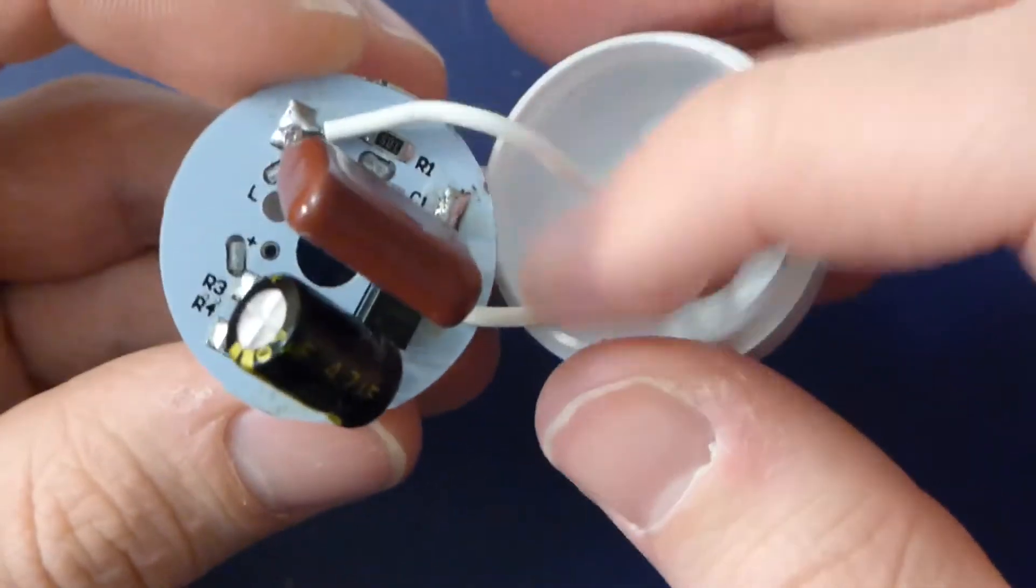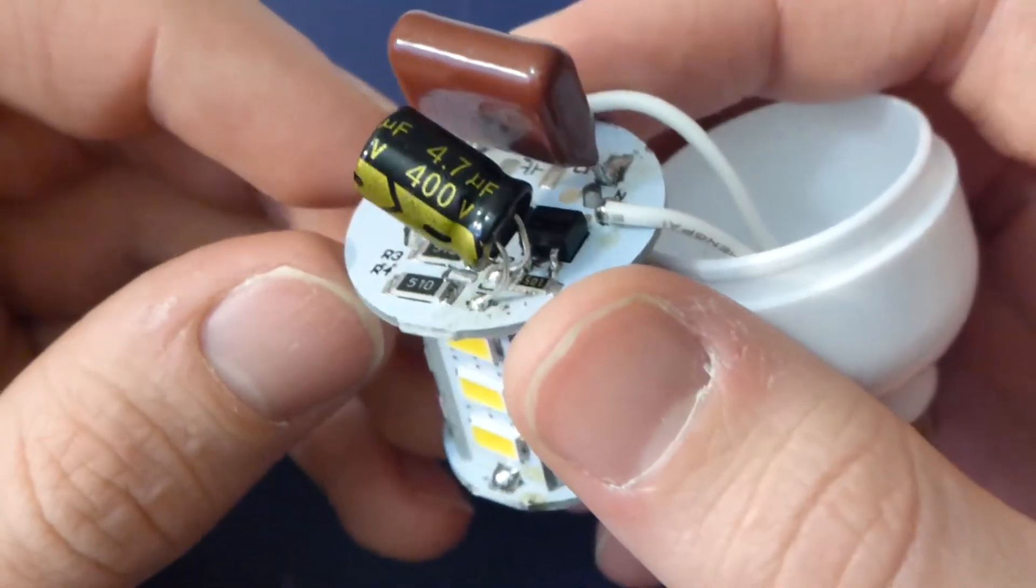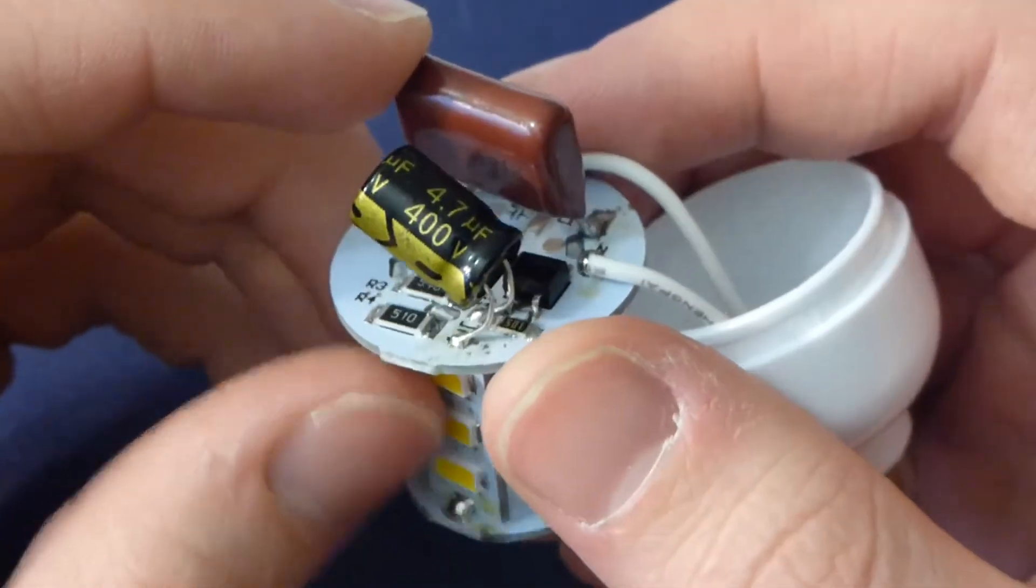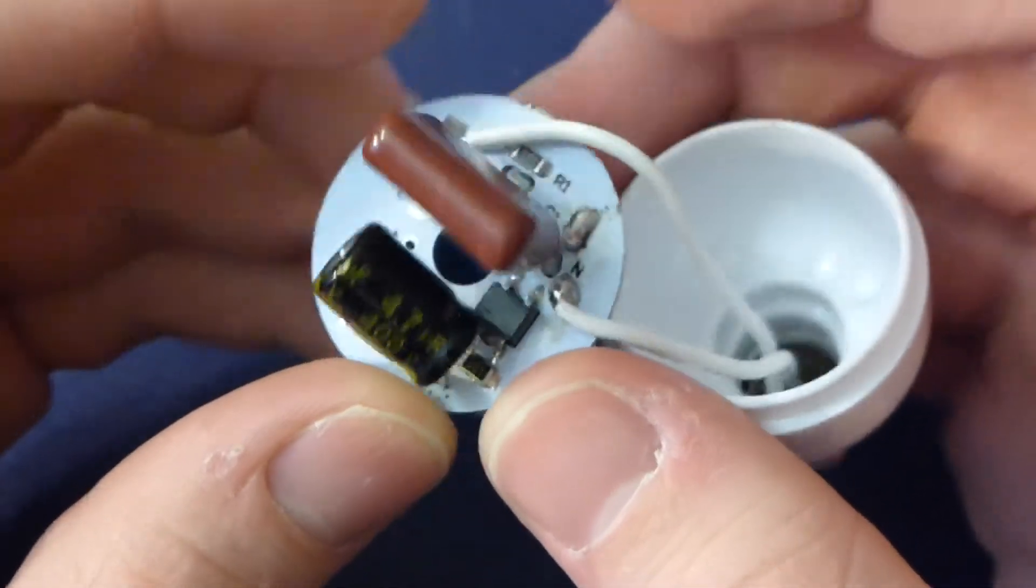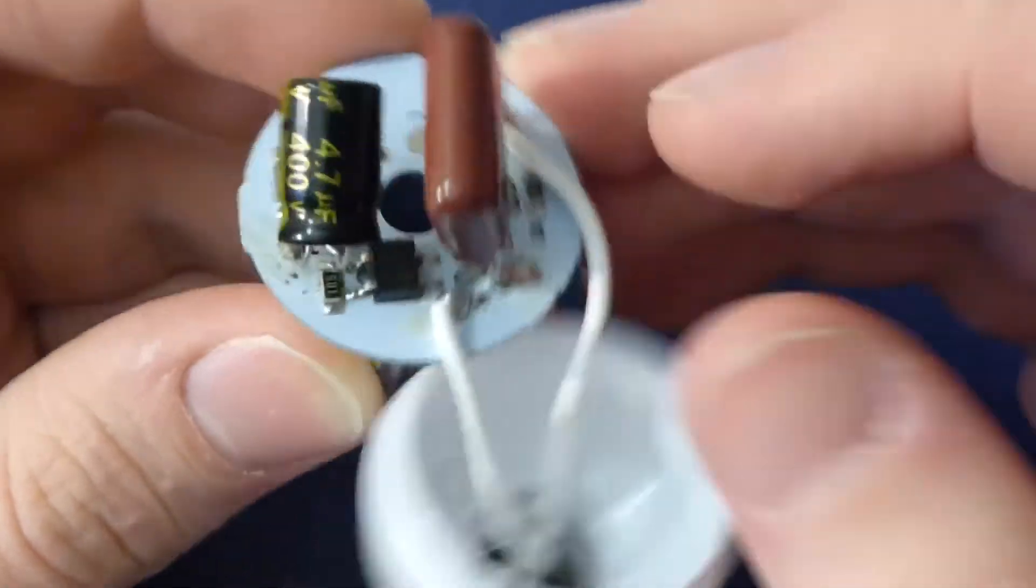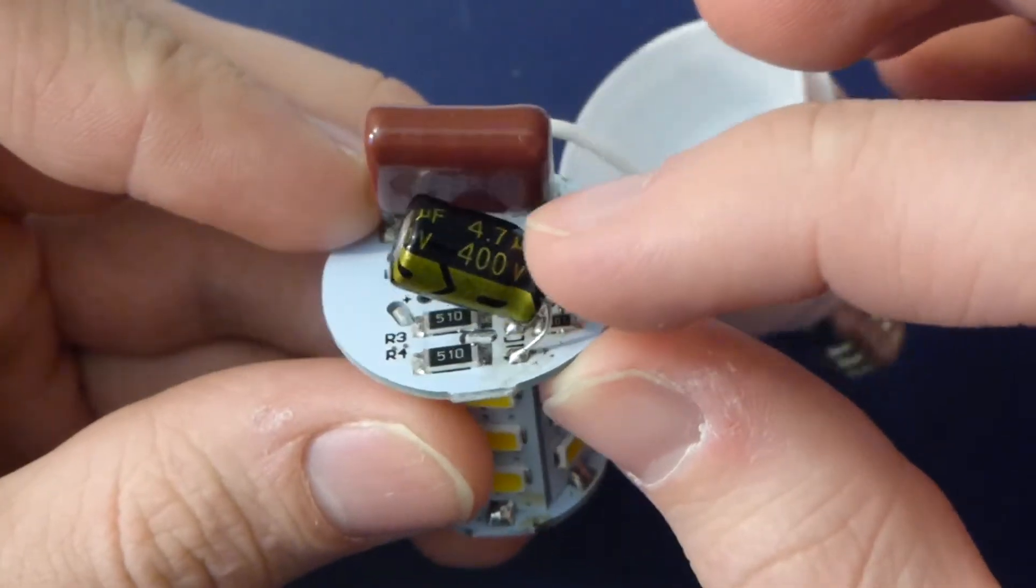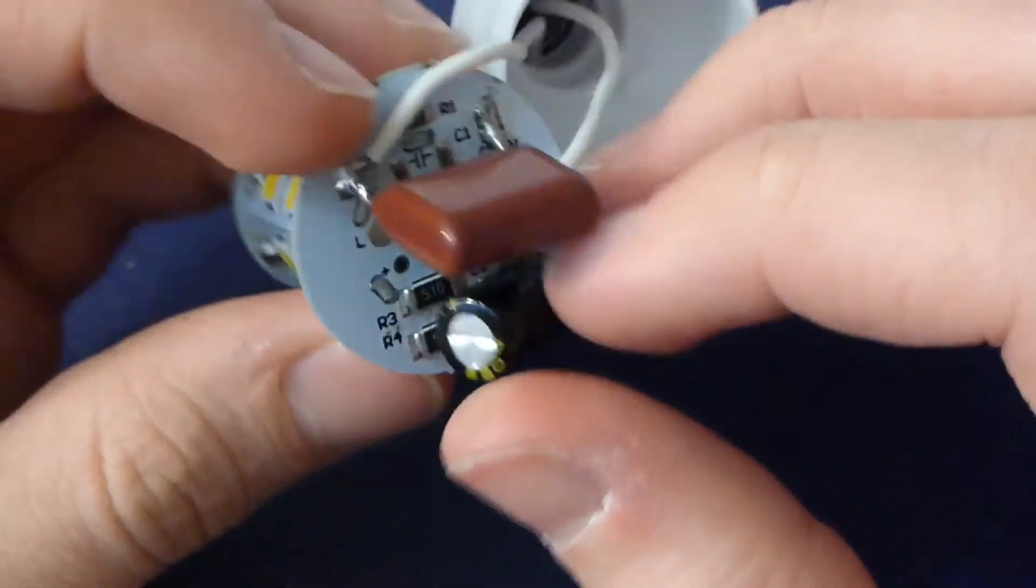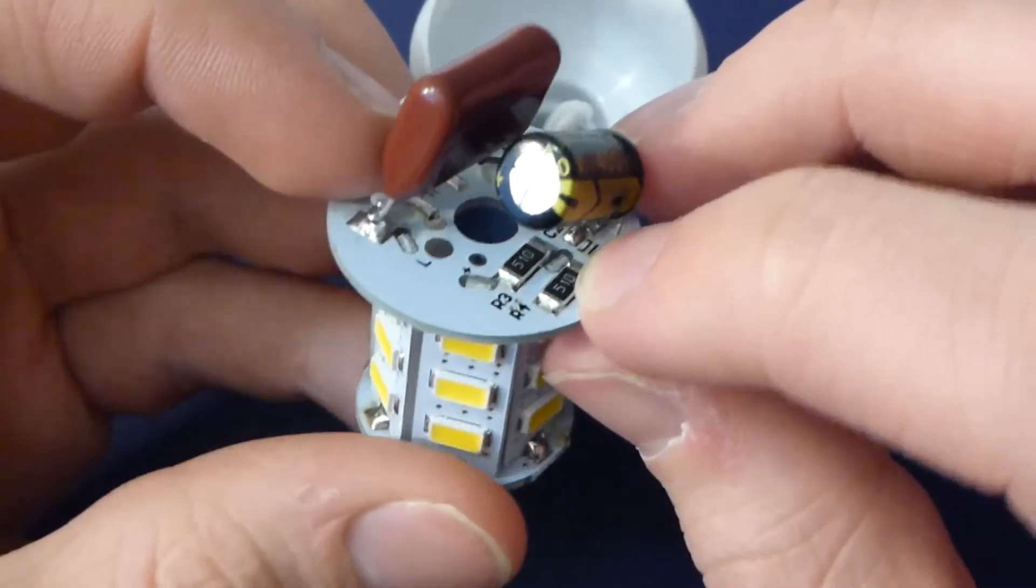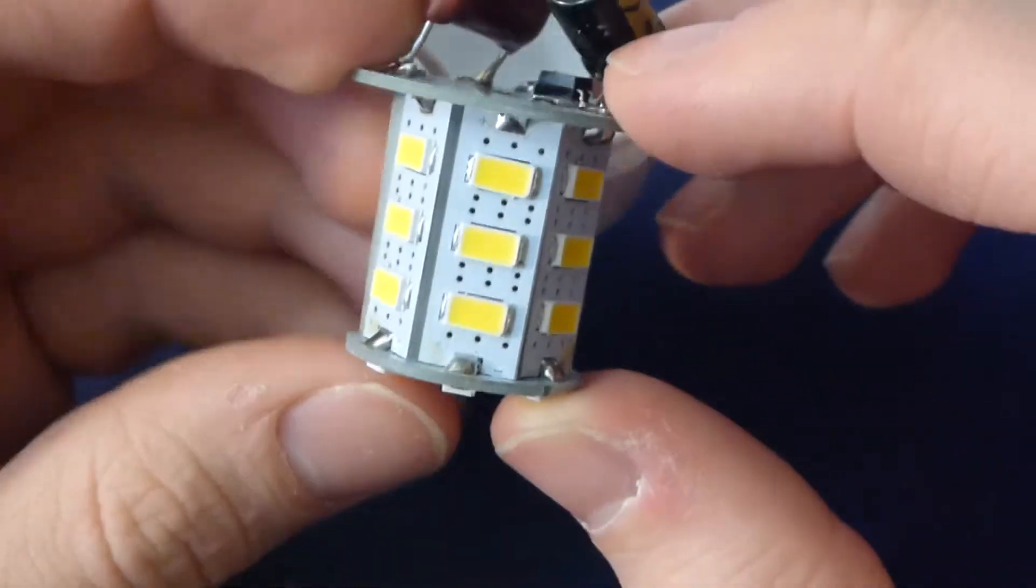Obviously we have a capacitive dropper here. There's a big 1.5 microfarad, 250 volt dropper capacitor here. It's got a bleed resistor. You have a bridge rectifier. 4.7 microfarad at 400 volt smoothing capacitor, which claims that it's 105 degrees C rated. We have two 510 ohm resistors that are in parallel.